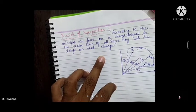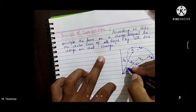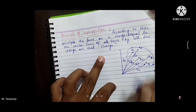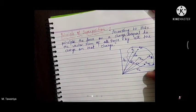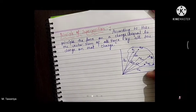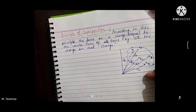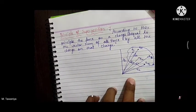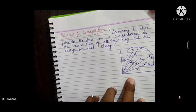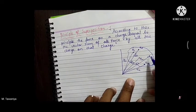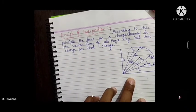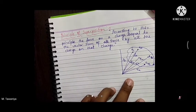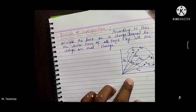और हम find करना चाहते हैं इस q0 पर force, जो कि r0 position vector पर है। तो इस पर force find करेंगे तो according to this principle, the force on a charge is equal to the vector sum of force by all the charges on that charge। यानि q1→q0, q2→q0, q3→q0, qn→q0 पर जो force लगा रहा है उन सभी forces का vector sum करेंगे — यही principle of superposition कहलाता है।